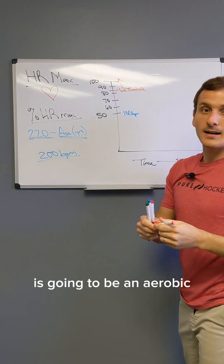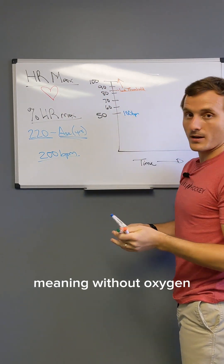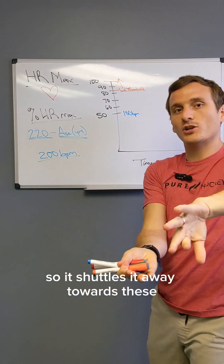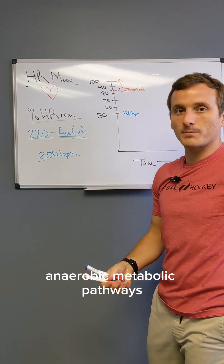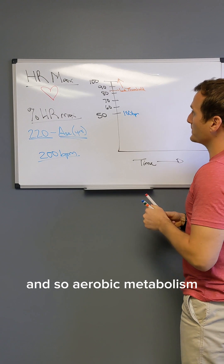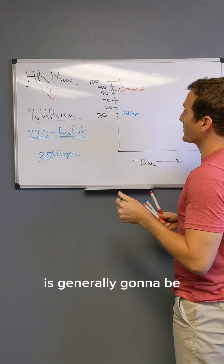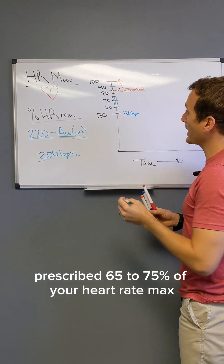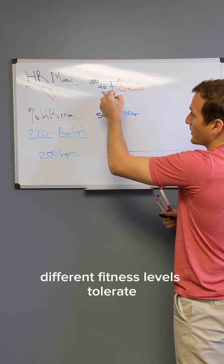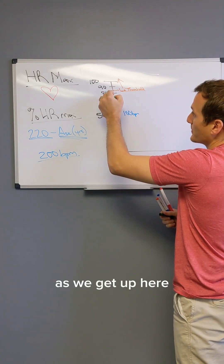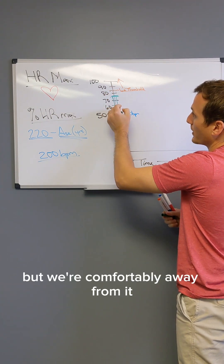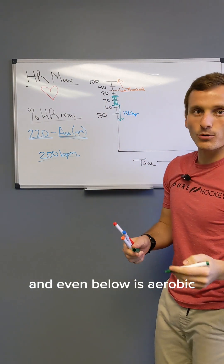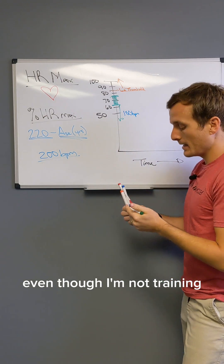Anything above the lactate threshold is anaerobic — meaning without oxygen. Your mitochondria literally can't process what's being fed into them, so it gets shuttled toward anaerobic metabolic pathways. Aerobic metabolism is generally prescribed at 65 to 75% of your heart rate max, because we're comfortably away from the lactate threshold in that range. Anything here and below is aerobic — I'm technically being aerobic right now, even though I'm not training.